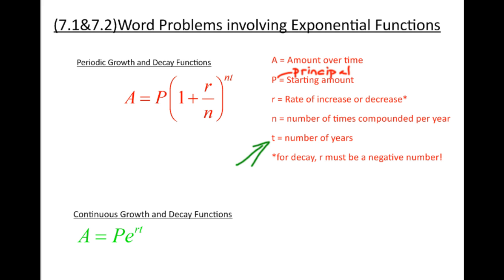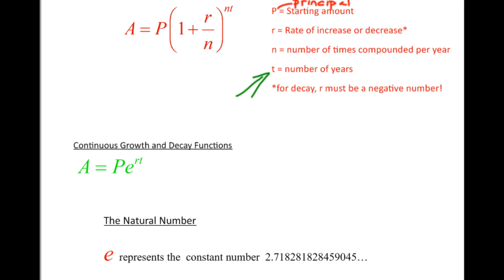That's one of the exponential functions that we're going to be dealing with. The other one is when things are continuously growing or decaying. They're constantly increasing or decreasing. That's where we use this formula. A equals P times e to the rt power. Now, this a value is the same a that you saw above. It's the amount you're going to have over time. This p is your principle again, your starting amount. The r is still the percentage rate. And the t is the time that you're dealing with.